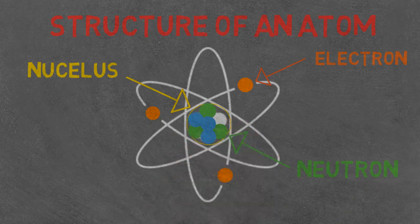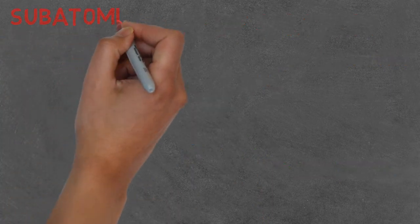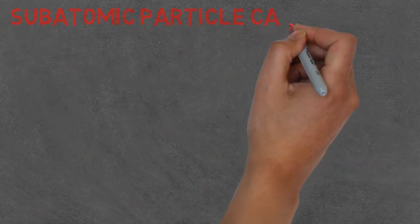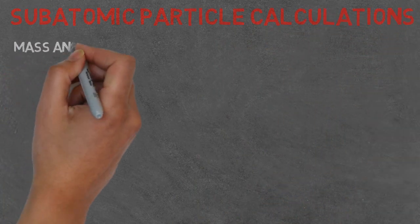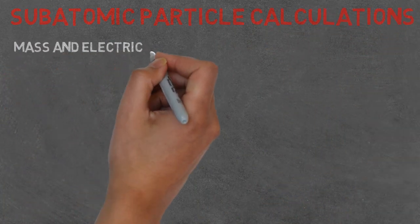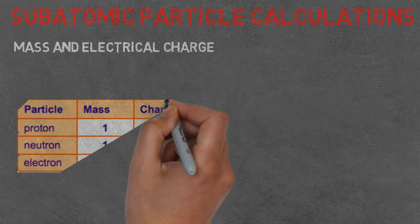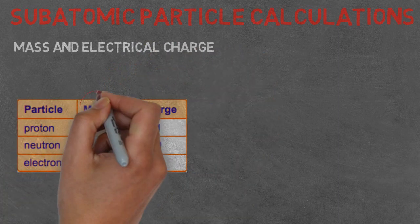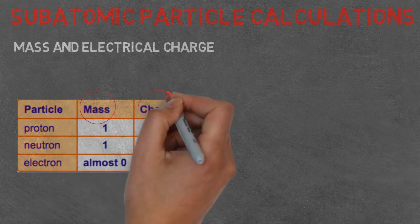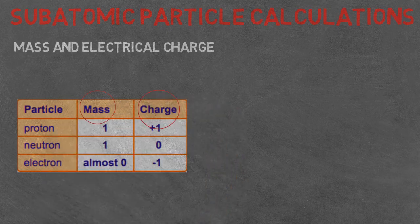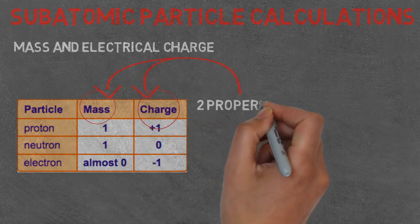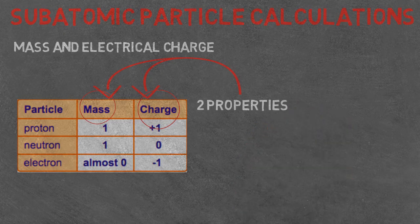So now that we know what an atom is and how it's structured, we can begin to look at calculating subatomic particles. Each particle has two properties: a mass, so how heavy it is, and a charge. This can either be positive, negative, or neutral. If we look at the proton in the table, you can see that it has one for mass and a positive charge. Whereas we look at the neutron, it has the same mass but a different charge as neutrons are neutral. Lastly, electrons have almost a zero mass and a negative charge.